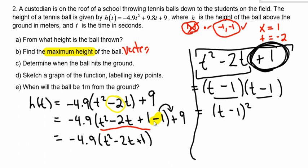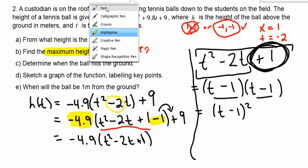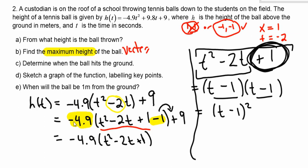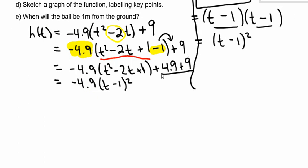I have t squared minus 2t plus 1. That's my perfect square trinomial. It's in the bracket because it's being multiplied by negative 4.9. So if I want to take it out of the bracket, I have to show that it's actually negative 4.9 times negative 1, which is positive 4.9. I have my perfect square trinomial. So now's the point where I factor it into a beautiful squared binomial. And here, I can just do 4.9 plus 9 is 13.9.